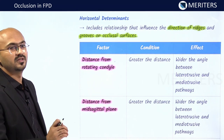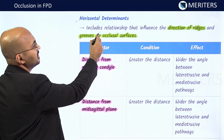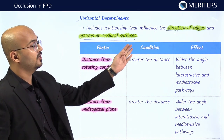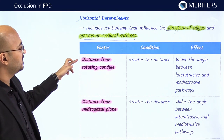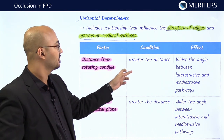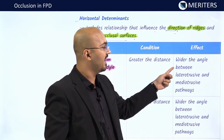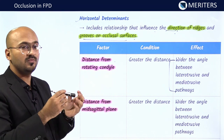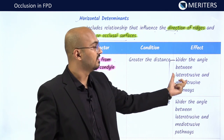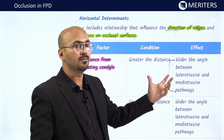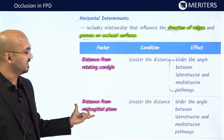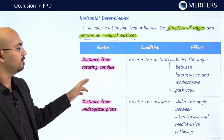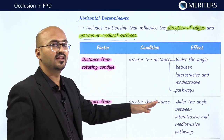Now for horizontal determinants, which influence the direction of ridges and grooves on the occlusal surface. If the distance from the rotating condyle is greater, you give a wider angle between the latertrusive and meditrusive pathways. Greater distance from the mid-sagittal plane also means a wider angle between lateral and medial pathways. Greater lateral translation movement also means wider angles for both lateral and protrusor pathways.